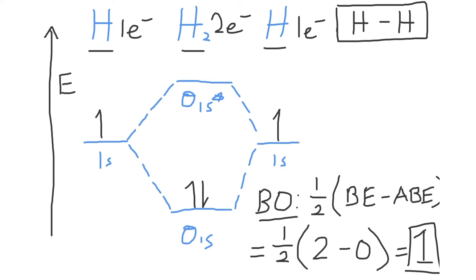Finally, is the H2 molecule paramagnetic or diamagnetic? The H2 molecule is diamagnetic, meaning it's repelled by an external magnetic field. And we know this by looking at the molecular orbital diagram because there are only paired electrons and no unpaired electrons.